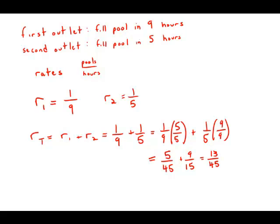And so this means that I would do 13 pools in 45 hours. So I'm not really interested in that. I really want to know how long it would take to do one pool. And so set up a proportion, cross multiply, and solve for x. x equals 45 over 13.